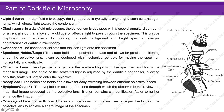The next slide discusses parts of dark field microscopy, which is very much similar to bright field microscopy. Light source: in dark field microscopy, the light source is typically a bright light such as a halogen lamp, which directs light towards the condenser. Diaphragm: in a dark field microscope, the condenser is equipped with a special annular diaphragm or central stop that allows only oblique or off-axis light to pass through the specimen. This unique diaphragm setup is crucial for creating the dark background and bright specimen images characteristic of dark field microscopy.